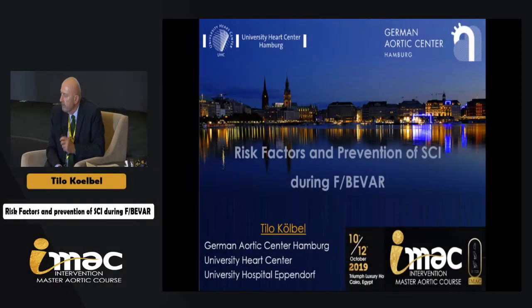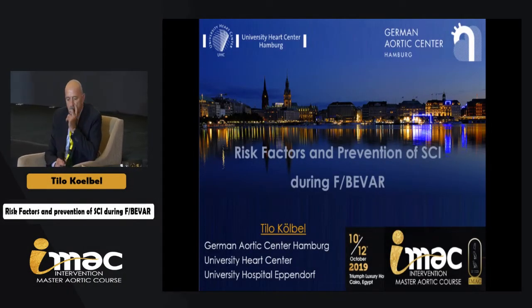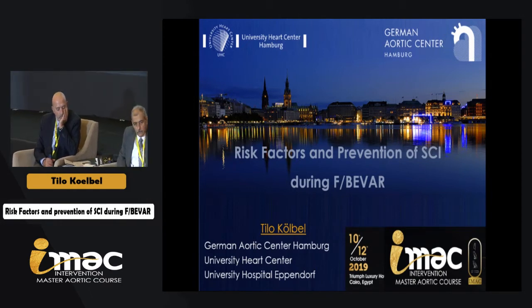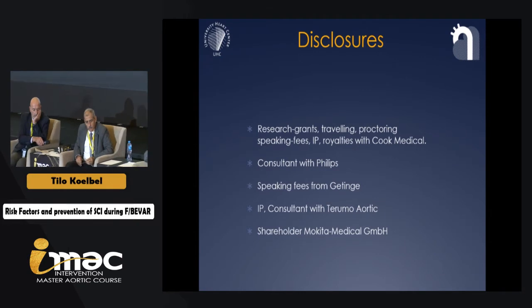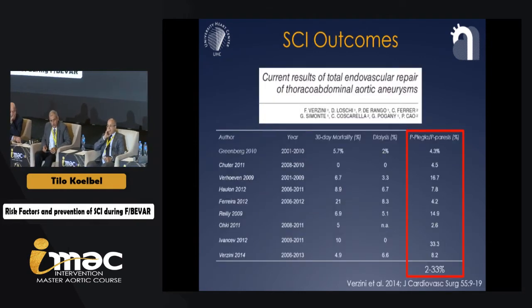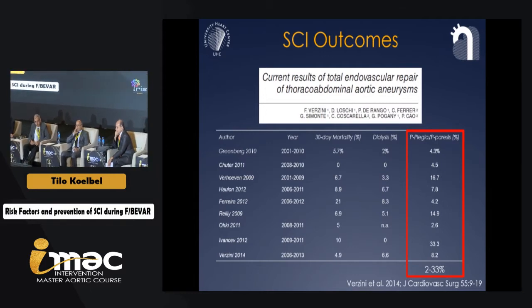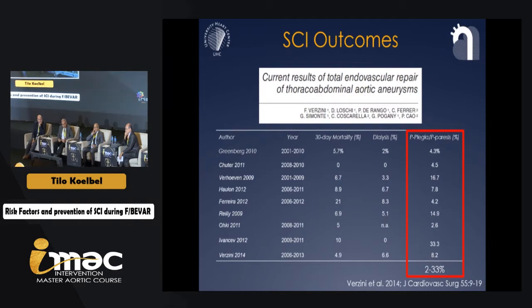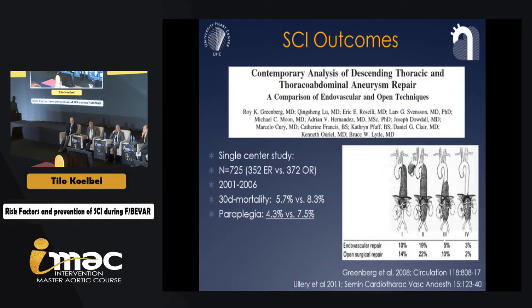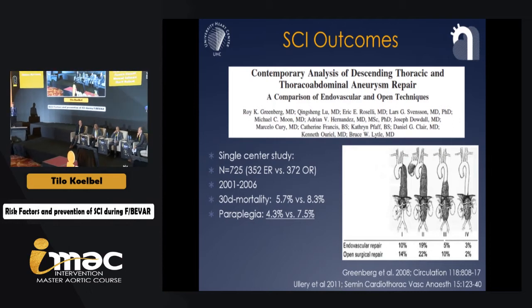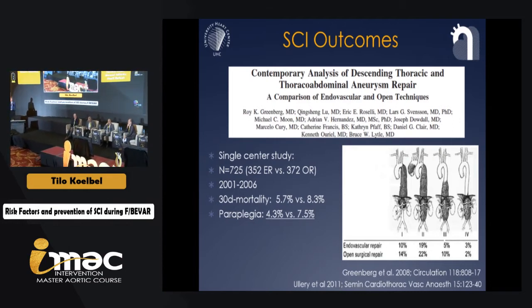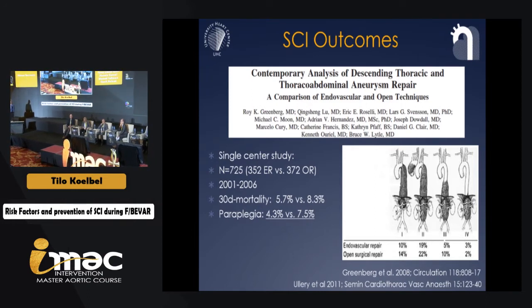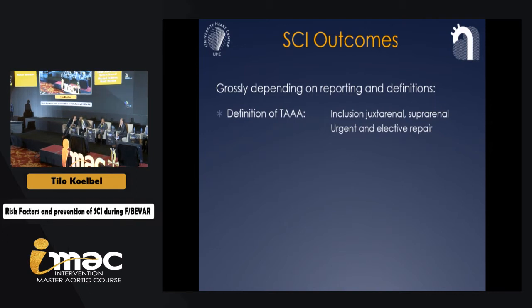Spinal cord ischemia is, besides stroke, probably the most feared complication of thoracoabdominal repair. We already saw the large variation in occurrence of spinal cord ischemia in thoracoabdominal repair performed in an endovascular way. Looking at an old publication from Roy Greenberg, we can see that both in endo and open repair, the percentage of spinal cord ischemia differs very much depending on the type of aneurysm and the extent of the repair.